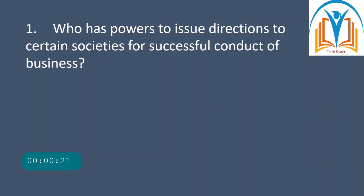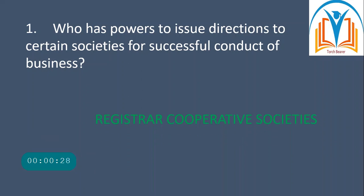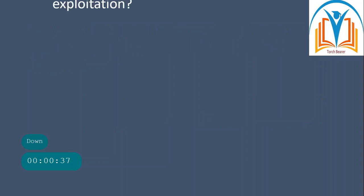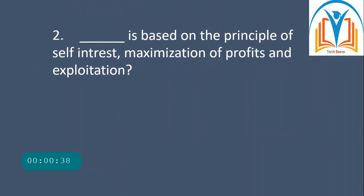The answer is Registrar Cooperative Societies — he has the power to issue directions to certain societies for successful conduct of business. Next question: what is based on the principle of self-interest, maximization of profits, and exploitation?